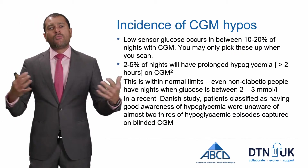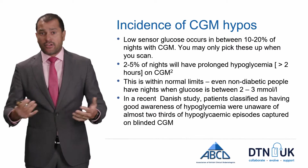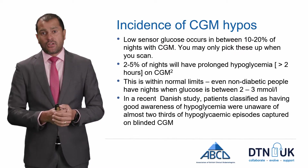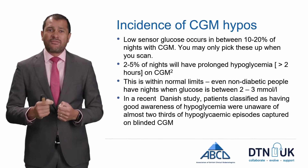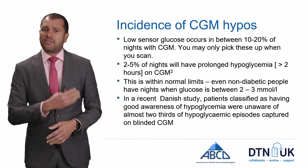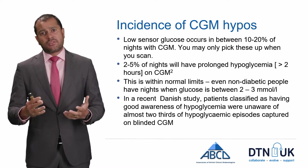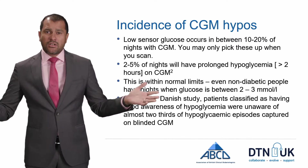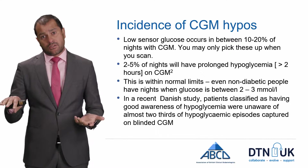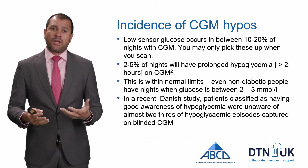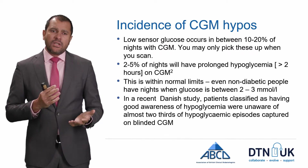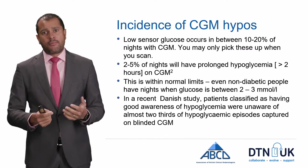With the Libre you're getting a lot more information than with finger pricks, and what we've found is that there's a lot of sensor glucose that reads low. Across a population, between 10 and 20% of nights will have lows on CGM that you only pick up when you scan, and 2 to 5% of those nights — perhaps as much as once a month — you'll have prolonged hypoglycemia where the sensor was low the whole night. Importantly, if you put a Libre sensor on someone without diabetes you also see low sensor glucose readings, so we have to interpret these overnight hypos with a degree of caution.